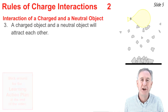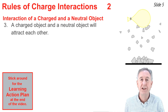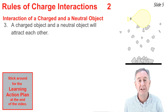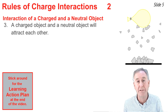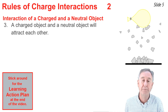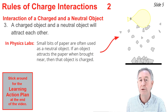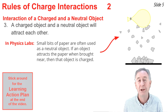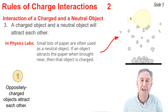The third type of charge interaction is the one least heard of. A charged object and a neutral object will attract one another. An example would be a charged balloon brought near neutral paper bits on a table — it will lift those paper bits up off the table. In physics labs, paper bits are often used as neutral objects. When you bring an object near neutral paper bits and it lifts them off the table, you know that the object is charged.